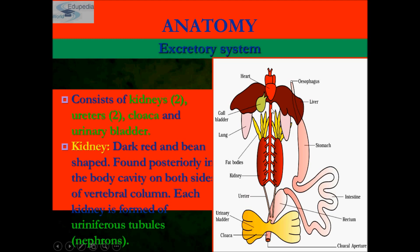This is the vertebral column, and the kidneys are found posteriorly in the body cavity on both sides of it. Each kidney is formed of uriniferous tubules, also known as nephrons. The nephron is the structural and functional unit of the kidney.